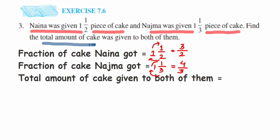The question asks us to find the total amount of cake, so we need to add the two fractions: three upon two plus four upon three. Since the denominators are different — two and three — these are unlike fractions.